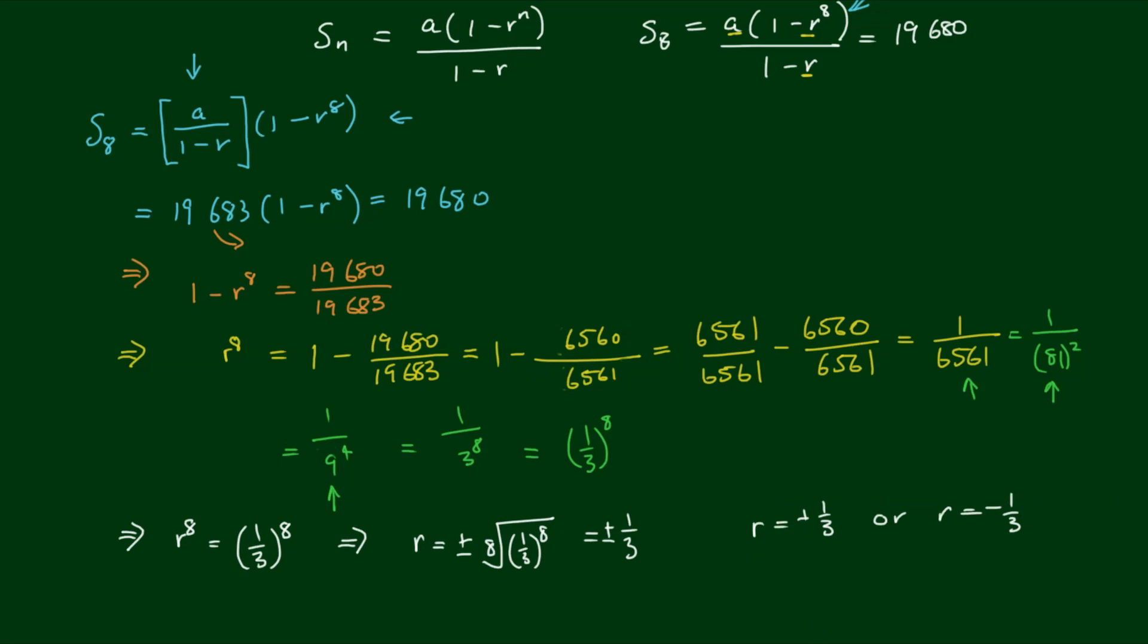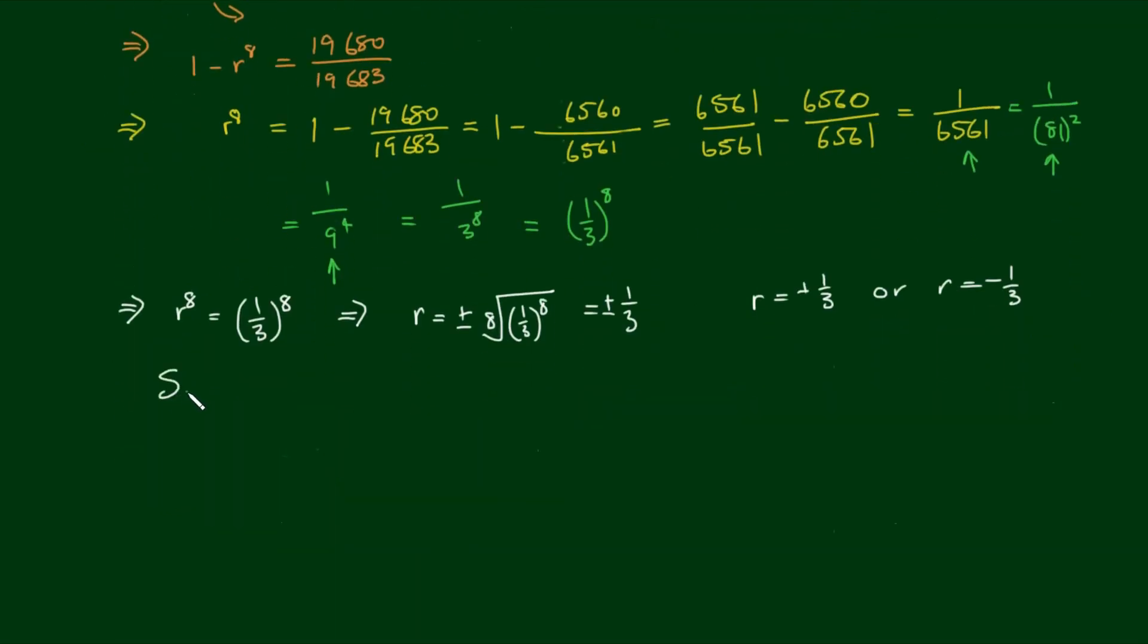So now that we've found the common ratio r, we can use this to find the first term a. With the sum to infinity, we had s sub infinity equals a on 1 minus r, which we know equals 19,683.